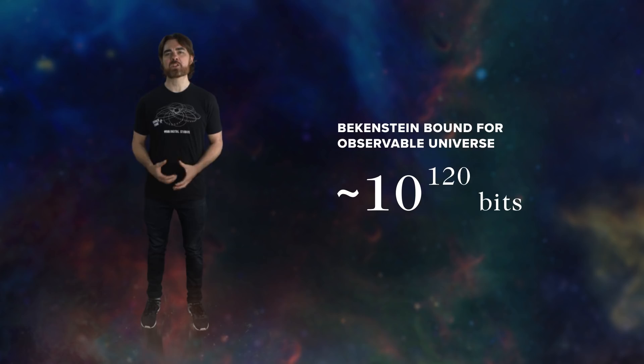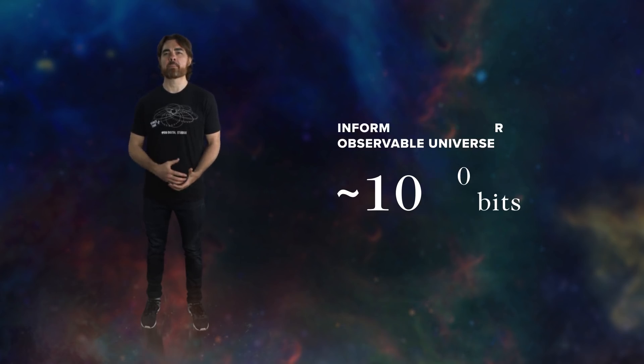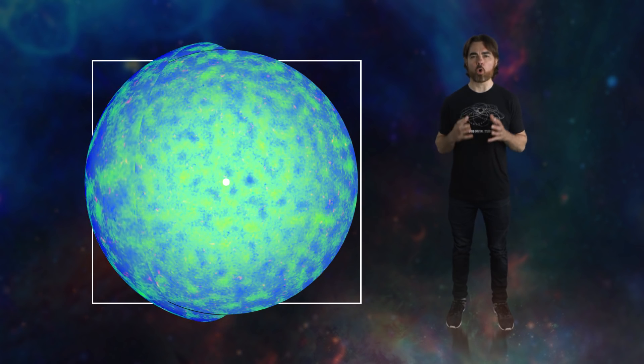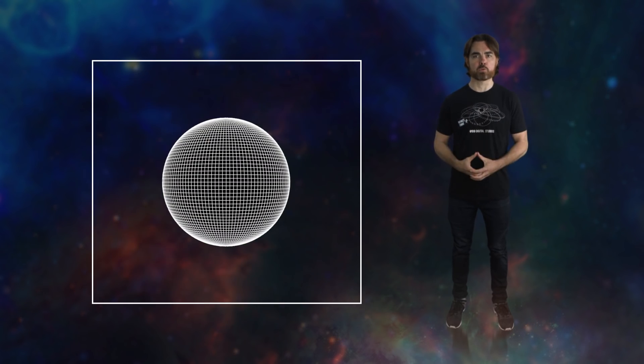We saw in our episode on the information content of the universe that the maximum information content, the Bekenstein bound of the observable universe, is around 10 to the power of 120 bits, based on its surface area. At the same time, the actual information content in matter and radiation is probably more like 10 to the power of 90 bits, roughly corresponding to the number of particles of matter and radiation.